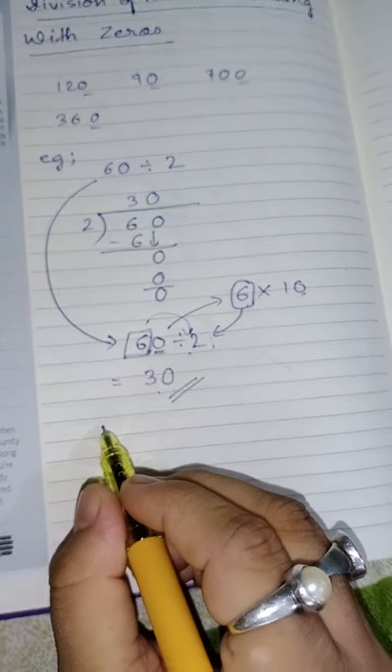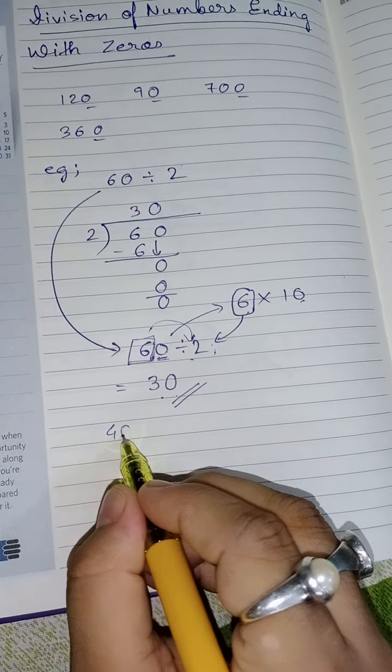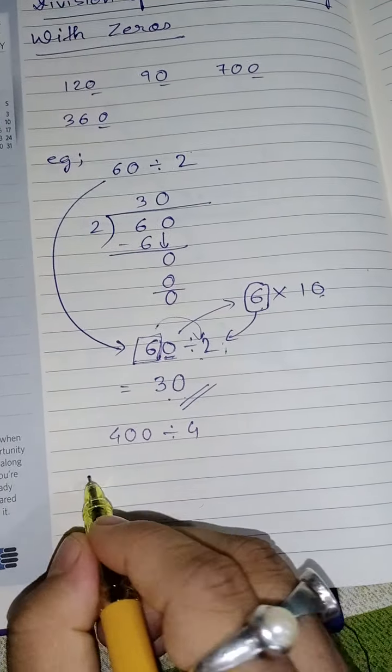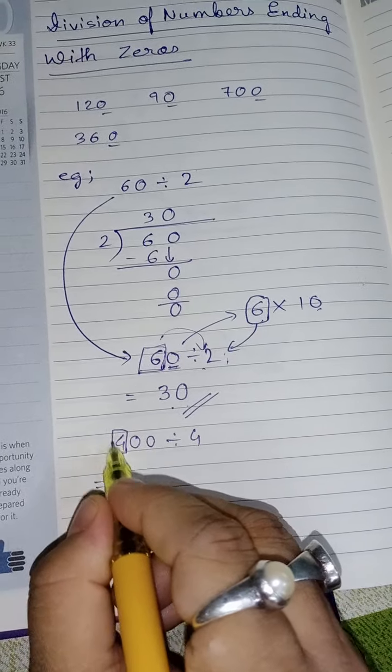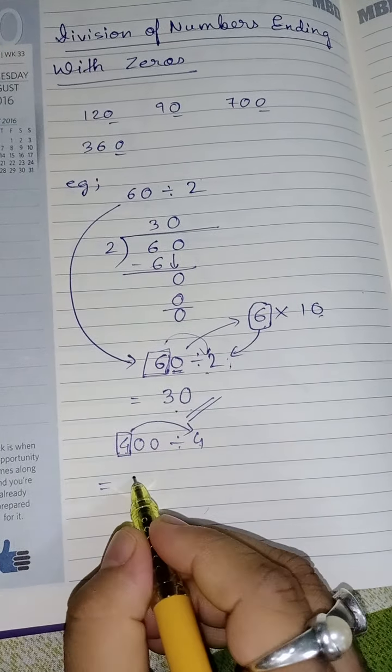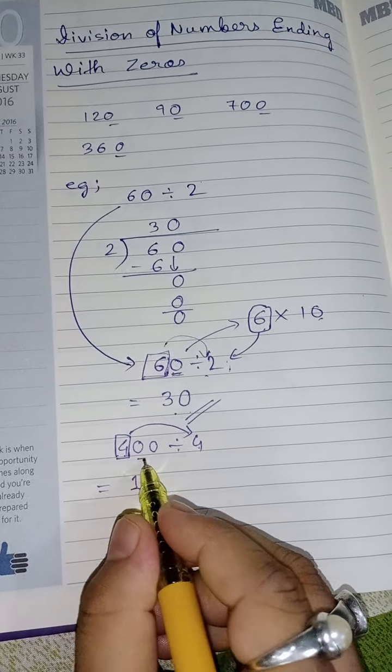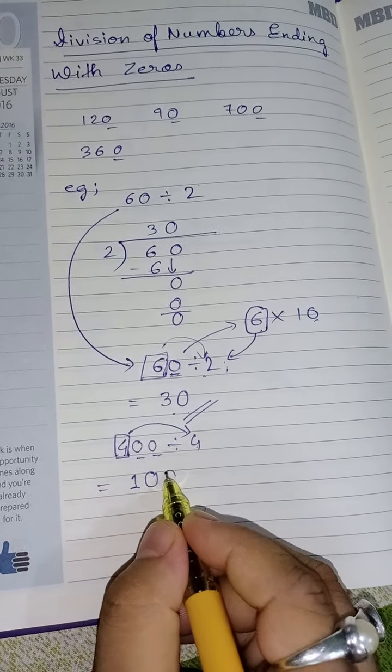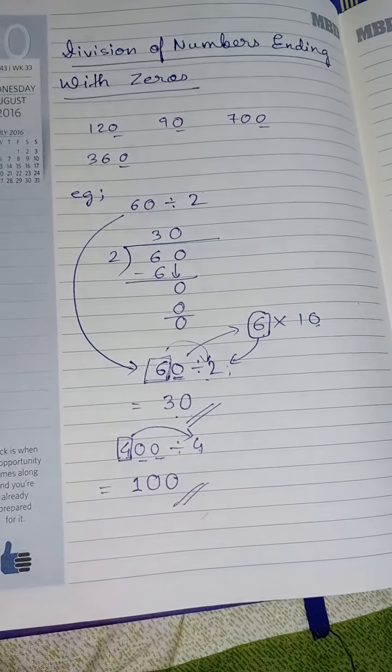For example, if I take 400 divided by 4, what is the non-zero number here? 4. So divide 4 with the divisor 4. So 4 divided by 4 is 1. Now there are two zeros. Put it here. The answer is 100.